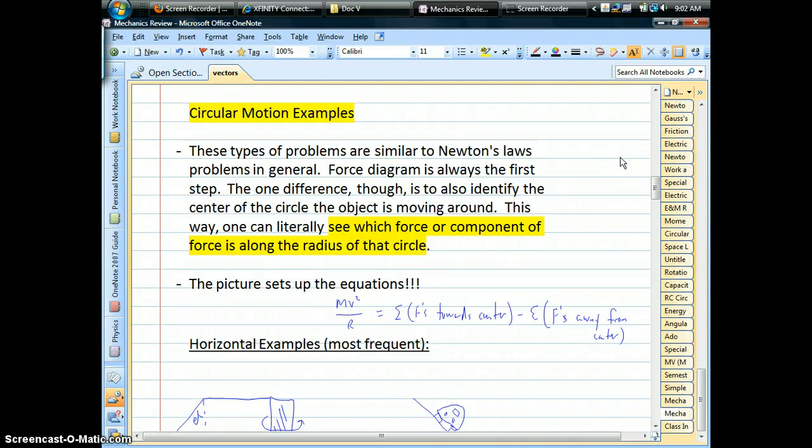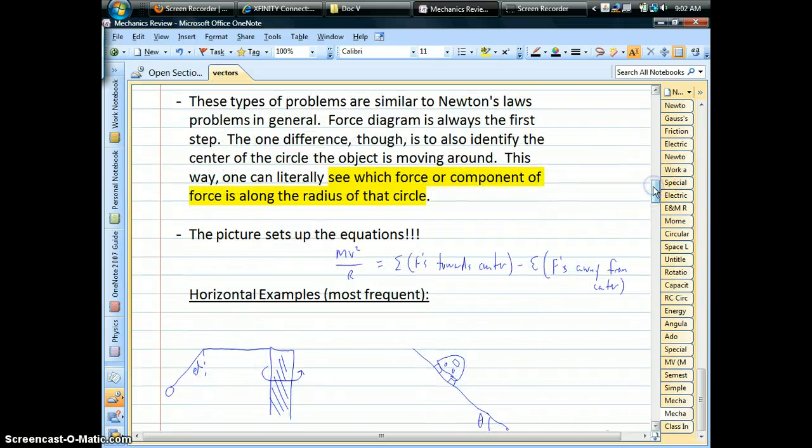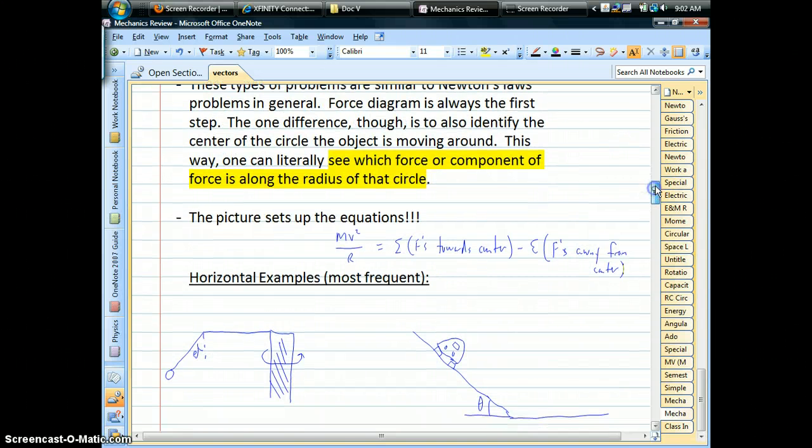Okay, we're back. We're doing a mechanics example, some circular motion. This is when we have to deal with net centripetal forces. And I just want to do a couple of examples of the two types of circles that we have: horizontal circles and vertical circles.